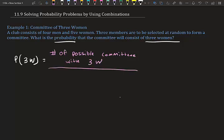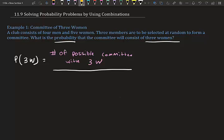The top of the fraction is the number of possible committees with three women — that's what we want to find. The bottom is always the total, so in this case it's going to be the total number of three-member committees. We have to find the combination for the possible three-women committees, then find the combination for all three-member committees. First, let's find the combination of just the possible women selections.